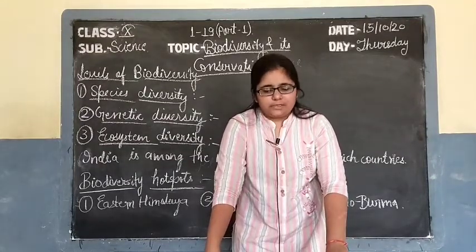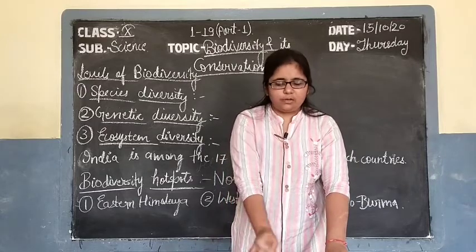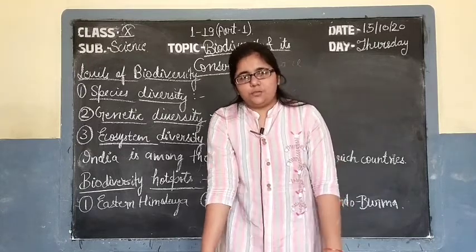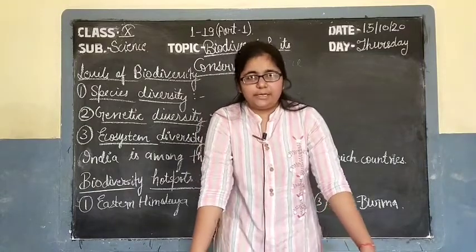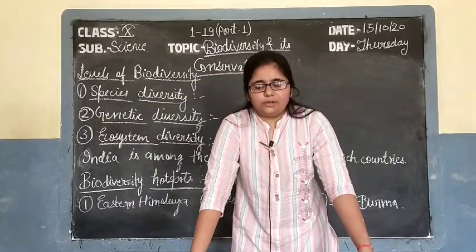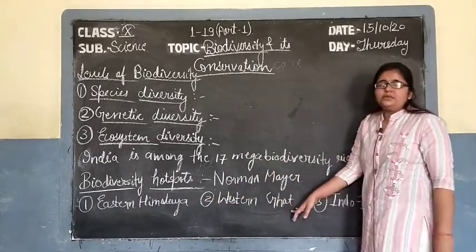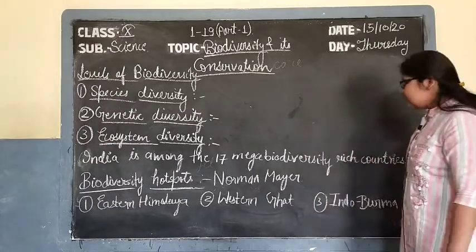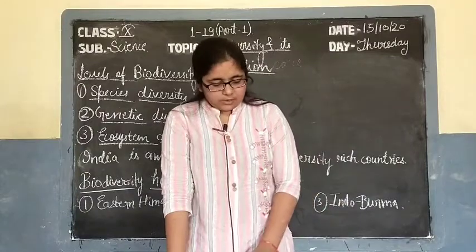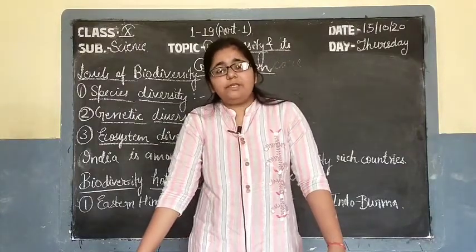Today we discussed the term biodiversity — its definition as the variation of living organisms. Then we studied global biodiversity, the diversity present all over the world. Then we discussed the biodiversity of India specifically, and the term hotspots — areas with maximum diversity where some species are endemic, meaning present only in a particular area. We discussed the 3 biodiversity hotspots in India: Eastern Himalaya, Western Ghats, and Indo-Burma. In the next class we will discuss endemic species, the importance of biodiversity, and the reasons for destruction of biodiversity. Thank you.